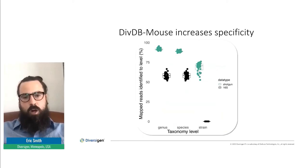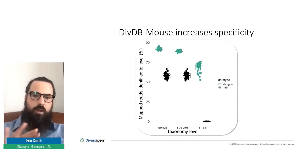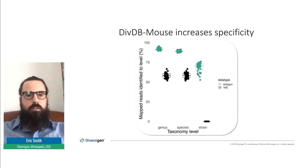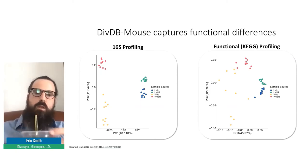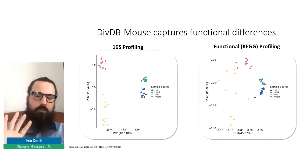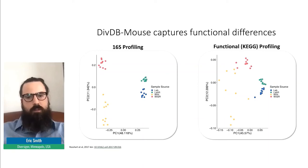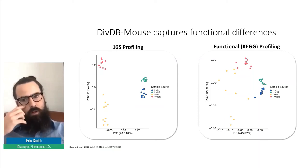Shotgun sequencing increases specificity over what we see via 16S sequencing — we're able to pull out much finer-scale resolution and differences in taxonomy. And one of the more interesting things to come out of this is strictly with functional profiling. With DivDB Mouse, you get organism profiling but also this functional aspect. Strictly with functional profiling, we're able to recapitulate what we see via 16S profiling.